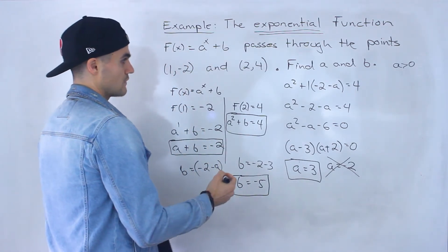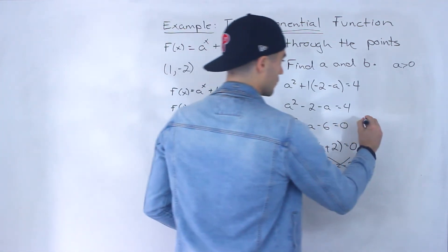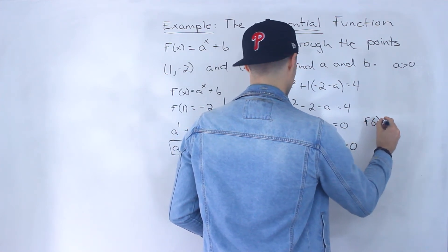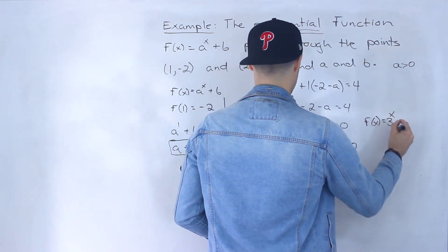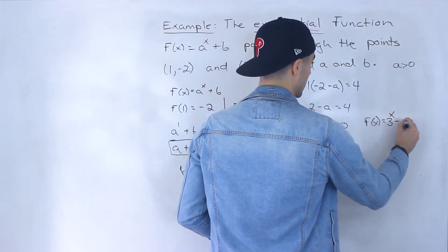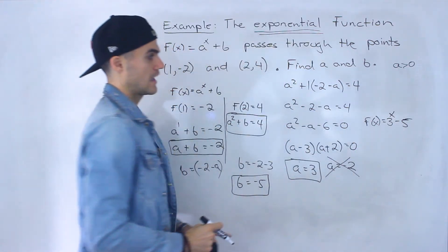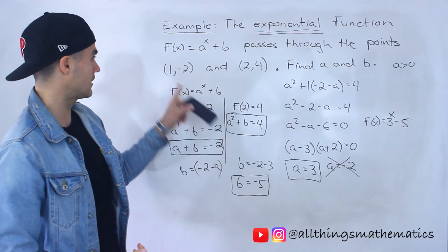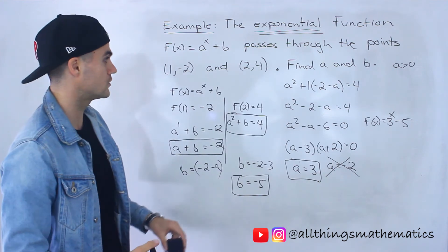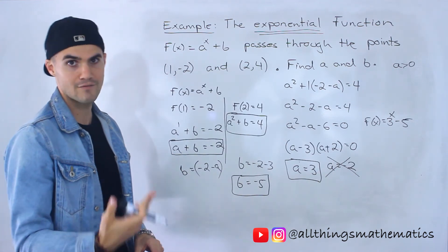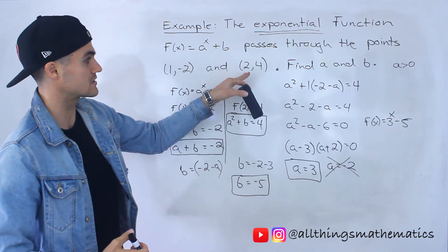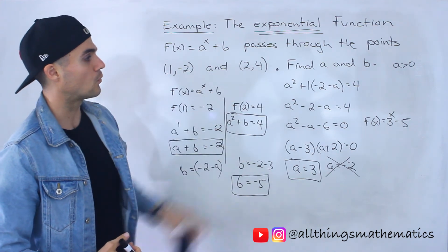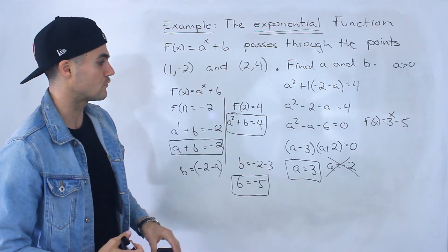So those are the two values. The final exponential function is f of x equals 3 to the power of x minus 5. You can test it — plug in 1 for x and you'll get a y value of negative 2. Plug in x equals 2 and you'll get a y value of 4.